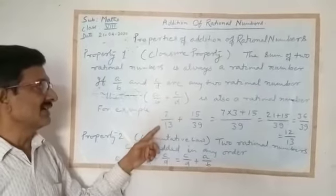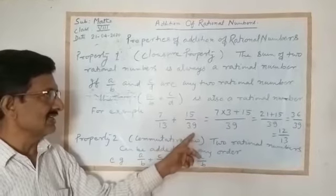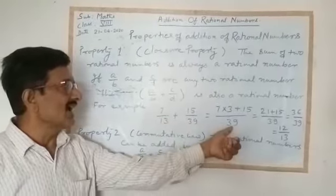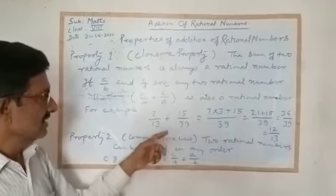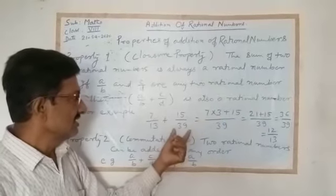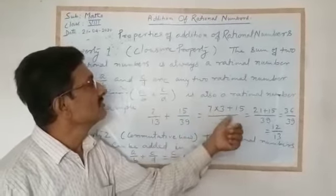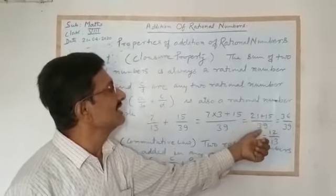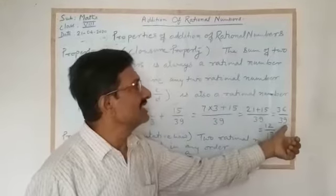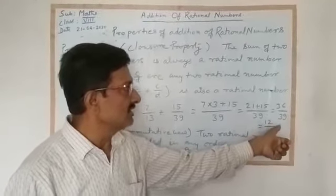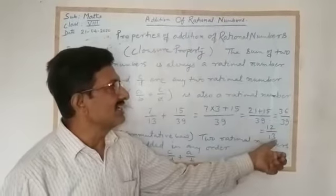For example, 7/13, which is a rational number, is added to 15/39, which is also a rational number. We find the LCM as 39. Dividing 39 by 13 gives 3, so 7 multiplied by 3 gives 21. The coefficient for 15 is 1, so 1 × 15 = 15. The result is (21 + 15) / 39 = 36/39. Simplifying to the lowest standard form gives 12/13. So 12/13 is also a rational number.